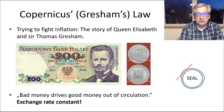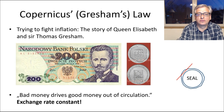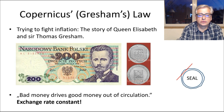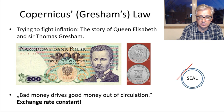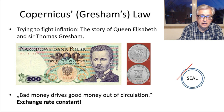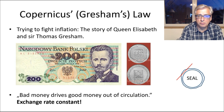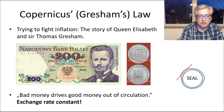Bad money drives good money out of circulation, and it's got something to do with this pile of coins. This is known as Gresham's Law, after Sir Thomas Gresham, who was a financial advisor to Queen Elizabeth the First. This law is also known as the Copernicus Law, because Copernicus was the author of a notable book on minting coins and handling money. The idea relates to debasing the coinage — using melting pots to produce more money from a limited stock of precious metals — which was popular with many rulers, including English kings.